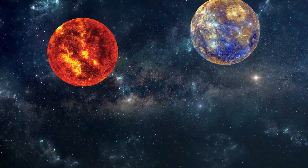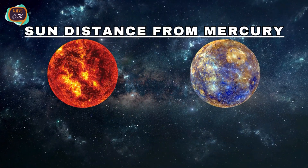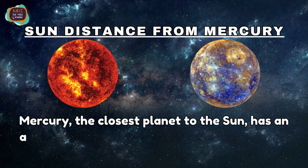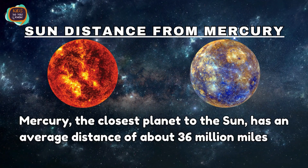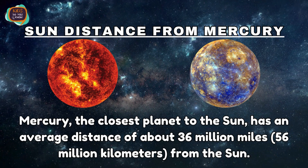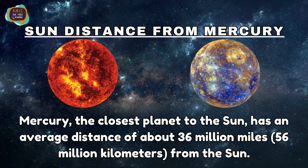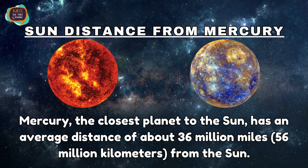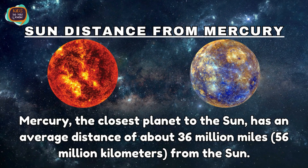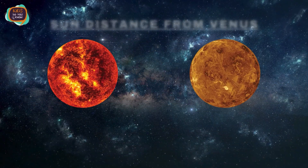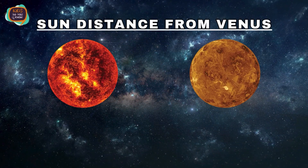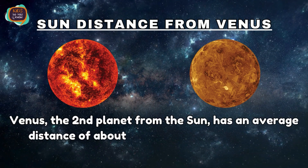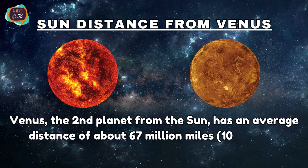Mercury, the closest planet to the Sun, has an average distance of about 36 million miles, or 56 million kilometers from the Sun. Venus, the second planet from the Sun, has an average distance of about 67 million miles, or 108 million kilometers from the Sun.